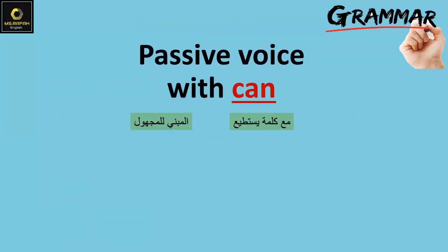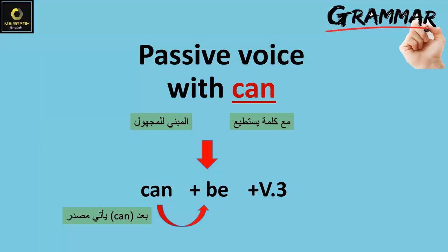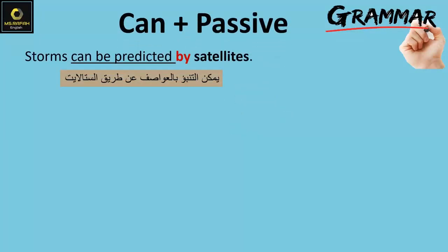For the passive with modal 'can': we put 'can' then 'be' then the verb in the third form. Summary: present simple passive — am/is/are + past participle; present continuous passive — am/is/are + being + past participle; with 'can' — can + be + past participle. For example: 'Storms can be predicted by satellites.' Another example: 'There has been an earthquake. People are being rescued by helicopter.'